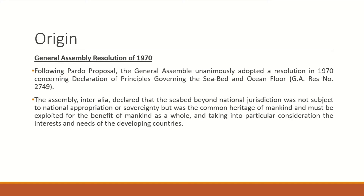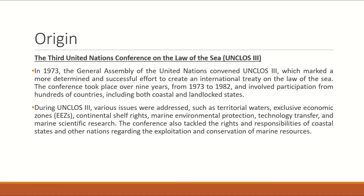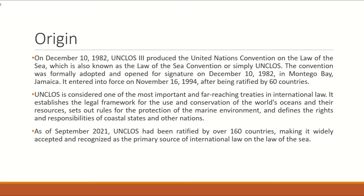UNCLOS-3 was convened in 1973. The aim of this conference was to make a comprehensive treaty. UNCLOS-3 was convened for 9 years, and over 100 countries participated. The issues addressed included coastal states' rights and responsibilities, as well as exploitation and conservation of marine resources. Finally, in 1982, UNCLOS-3 produced the United Nations Convention on the Law of the Sea. UNCLOS came into force in 1994, when it was ratified by 60 countries.